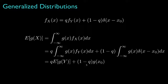Likewise, we'd get a similar result for the expected value of any function of the random variable x. That is, the expected value of g of x would be q times the expected value of g associated with this continuous density, plus 1 minus q times the function evaluated at the location x0.